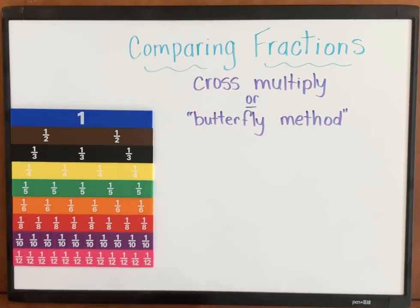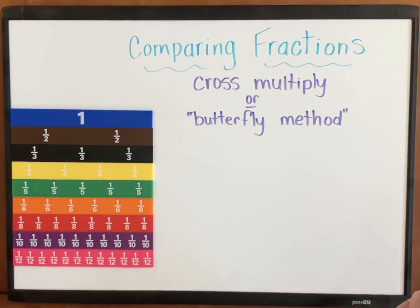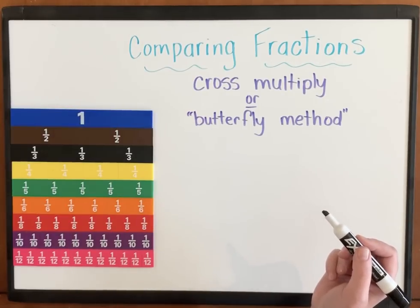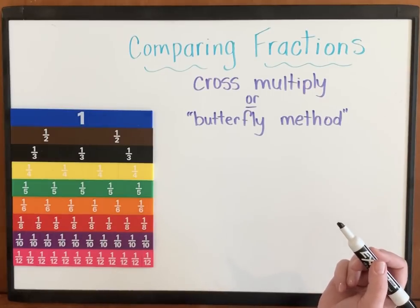It can get a little messy with all of those cross circlings. I've seen kids cover numbers accidentally. So you have to be very careful with it. I like to cross multiply without the butterfly wings because I think it's much neater and it goes much faster.